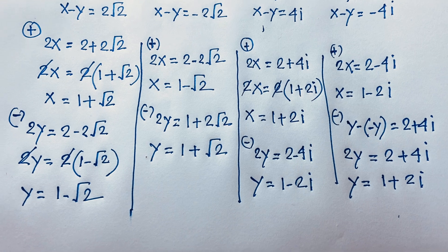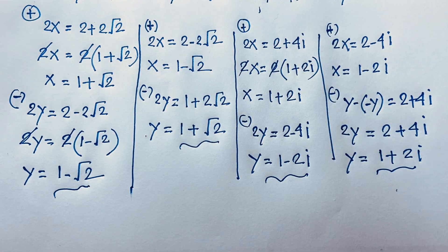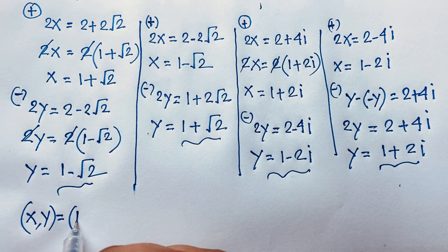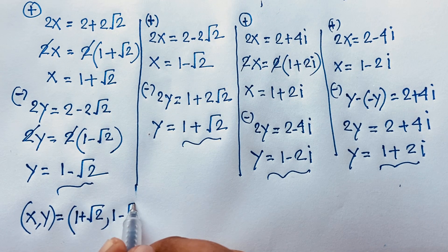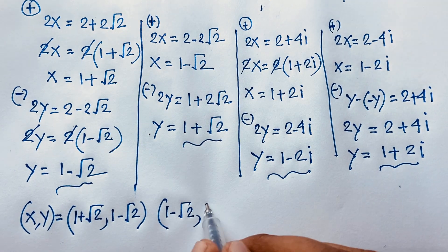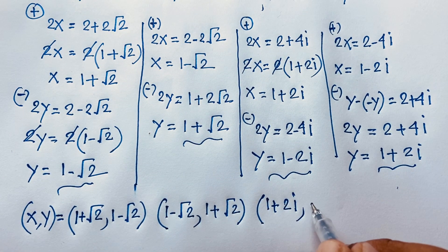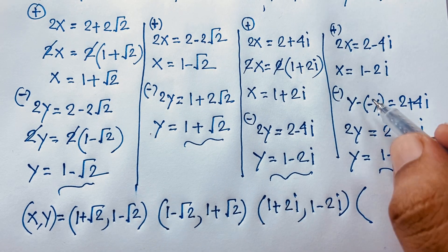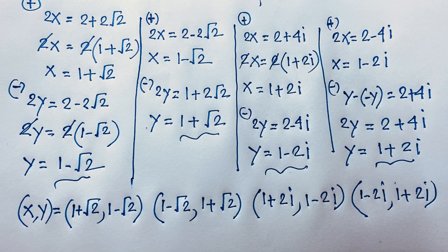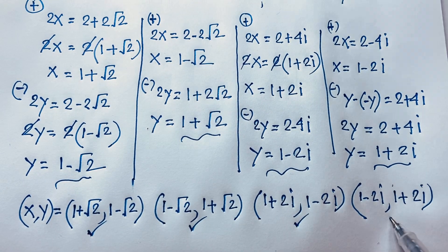So this is our final answer in this math problem. The real solutions are: x = 1 + √2, y = 1 minus √2 and x = 1 minus √2, y = 1 + √2. The complex number solutions are: x = 1 + 2i, y = 1 minus 2i and x = 1 minus 2i, y = 1 + 2i. These first two are real solutions; the latter two are complex numbers.